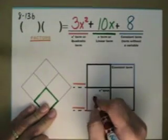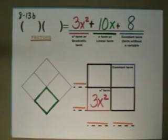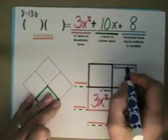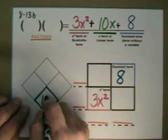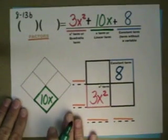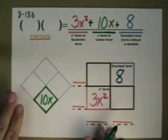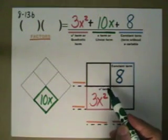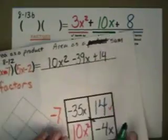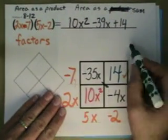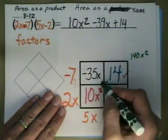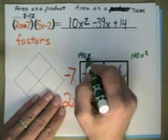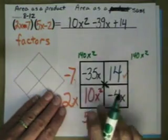So we put 3x² here. Put the constant term of 8 and it is positive there. Put the linear term of 10x here. Now, the reason we want to do this is you will remember from section 8-1-1 that in the generic rectangle, if I multiply the diagonals here, I get 24x². Multiplying this diagonal, I also get 24x². And that is always going to be true in these generic rectangles.